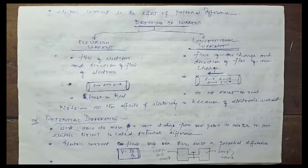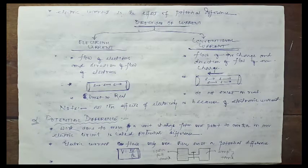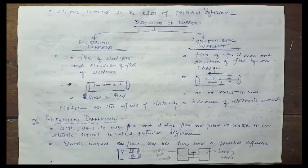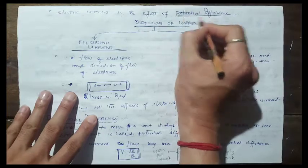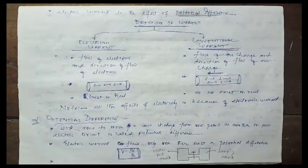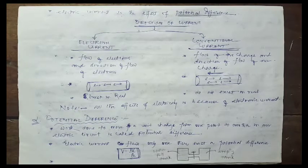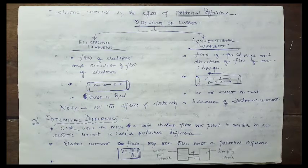Now we know what electric current is. The next question is: why does electric current flow? What is the cause of the flow of electric current? The most important condition for electric current to flow is the existence of potential difference. If there is a potential difference, current flows. If potential difference doesn't exist, no current will flow. We will understand what potential difference is after some time.